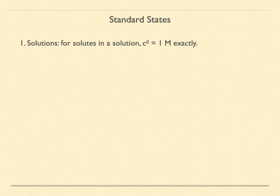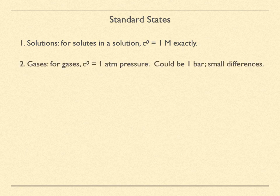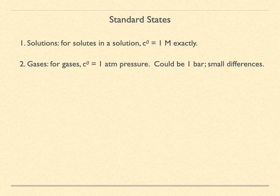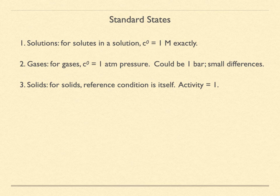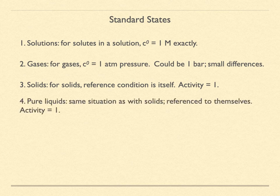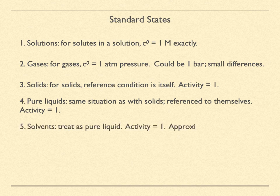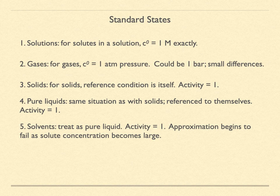Here are the key standard states that are commonly chosen and will be what we are working with in this class. For solutions, the standard state will be one molar. For gases, the standard state will be one atmosphere. Scientists are increasingly turning to using one bar for the standard state for gases. The difference is small but measurable. One bar equals 100 kilopascals, while one atmosphere equals 101.325 kilopascals. When we have a solid substance, whether crystalline or amorphous, we select its standard state to be that of the solid itself. This means that its activity is itself divided by itself, which is just one. The same is true for pure liquids. Their reference state is themselves, and their activity ratio is also just one. In the case of solvents, when solute concentrations are small, then it is close to being itself as a pure liquid, and so it is treated similarly with an activity of 1. As solute concentrations increase, this becomes a weaker approximation, but for our purposes we will assume that solvents are also pure liquids.